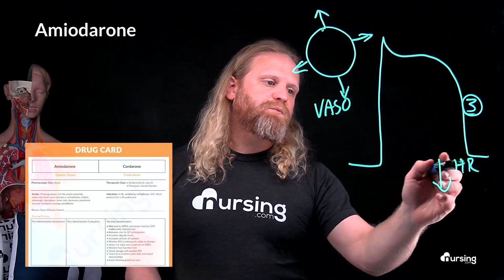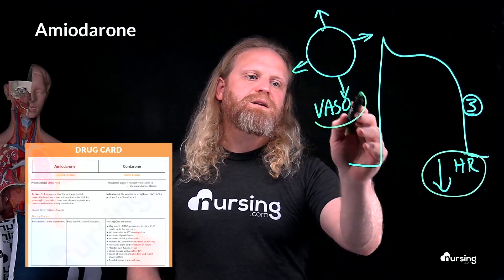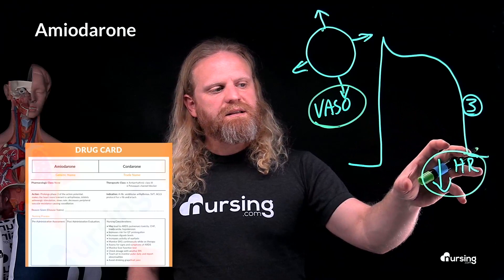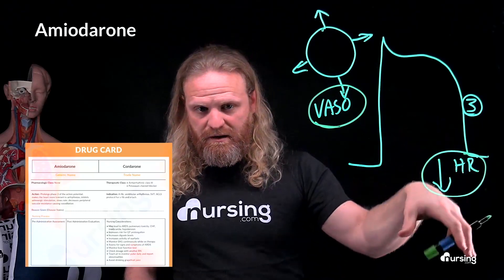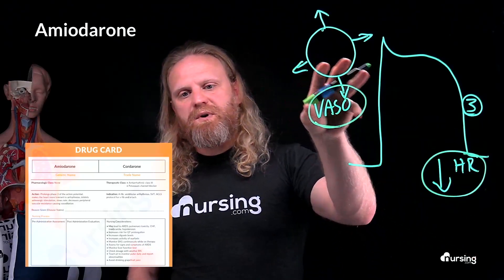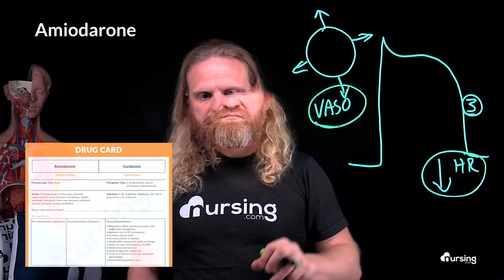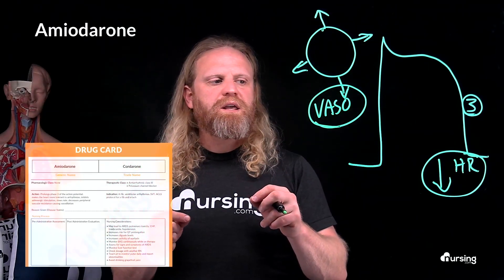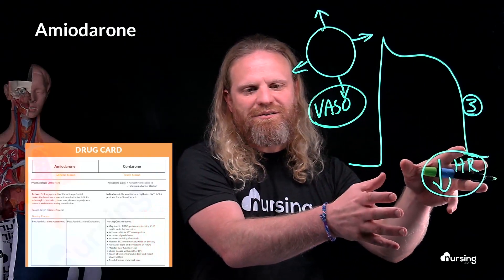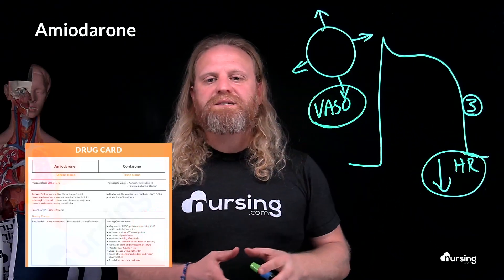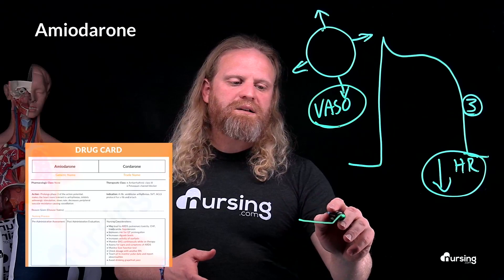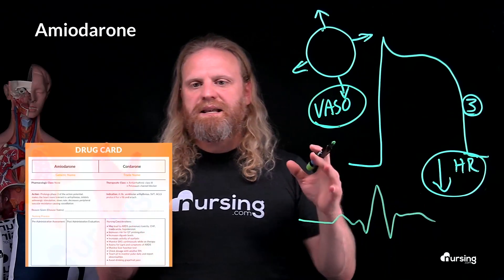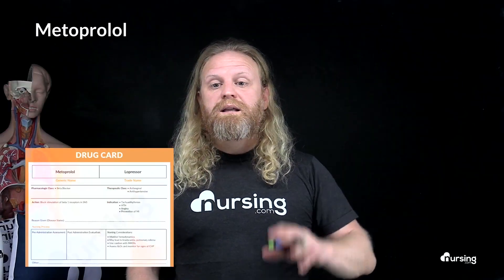Looking at the side effects: since amiodarone decreases heart rate and increases vasodilation, we'll be watching specifically for bradycardia and hypotension. There are many other side effects, but the key point is that we're affecting heart rate and peripheral vascular resistance, so watch the patient's EKG the entire time they're taking amiodarone.